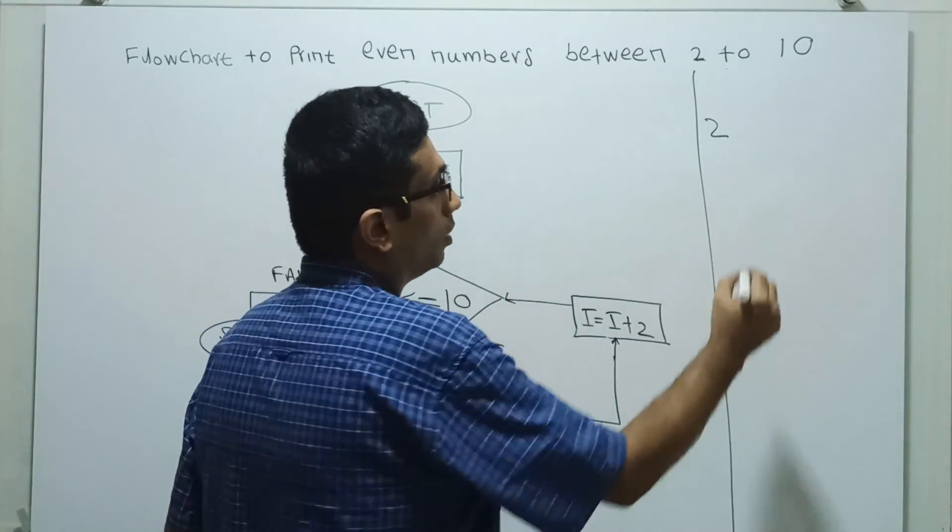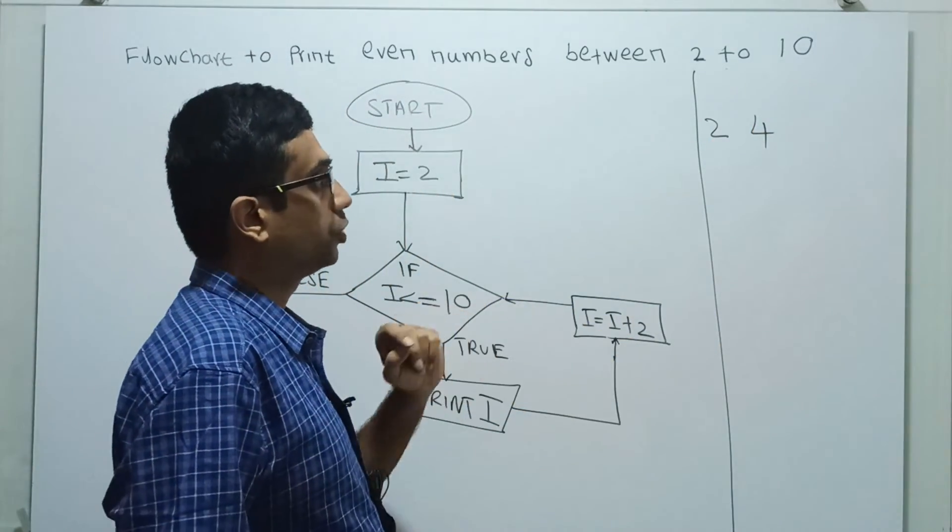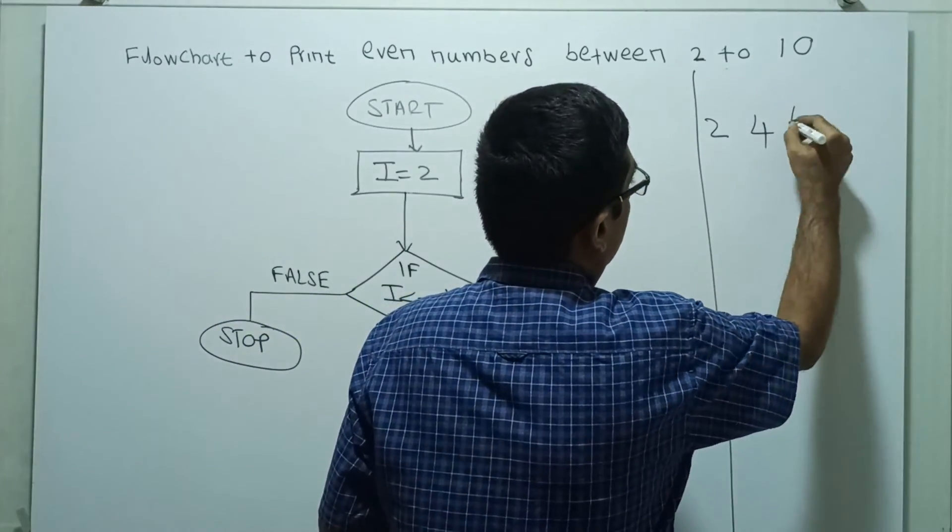4 less than or equal to 10, true. It will print 4. Next, i equal to i plus 2, i equal to 6. 6 less than or equal to 10, it will print 6.